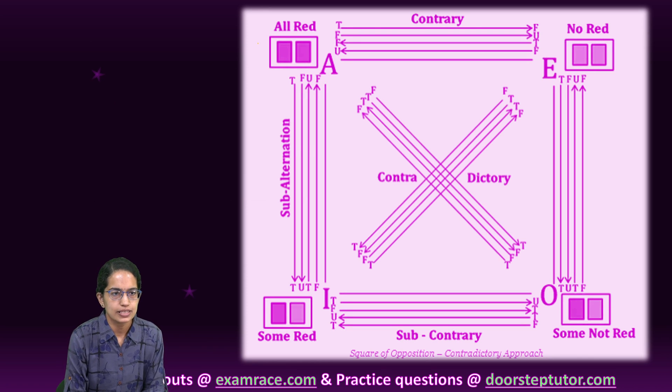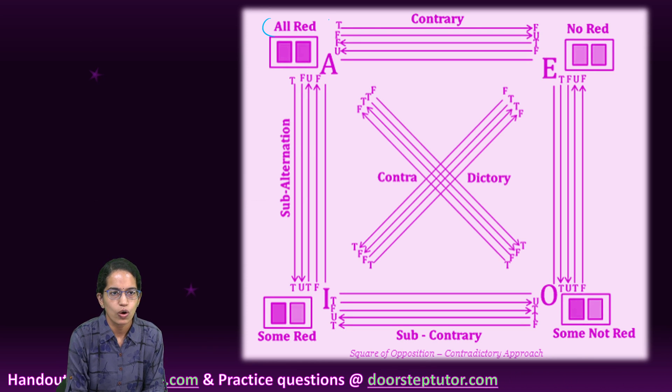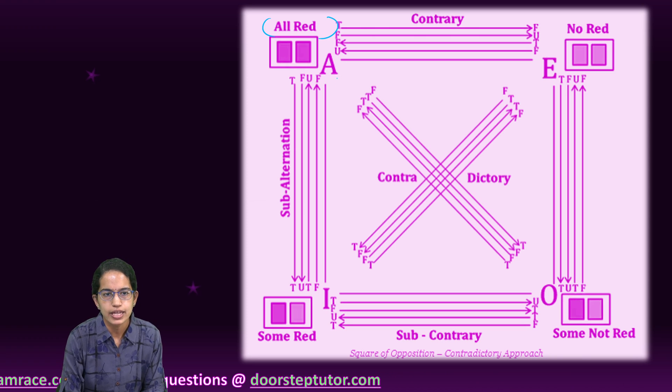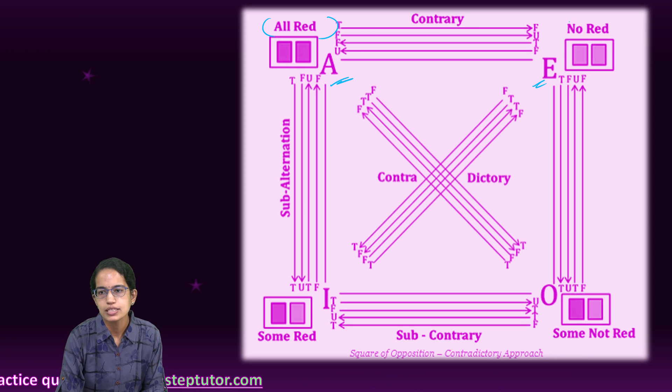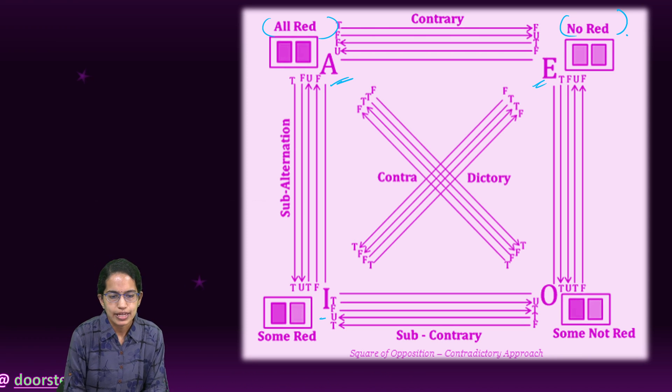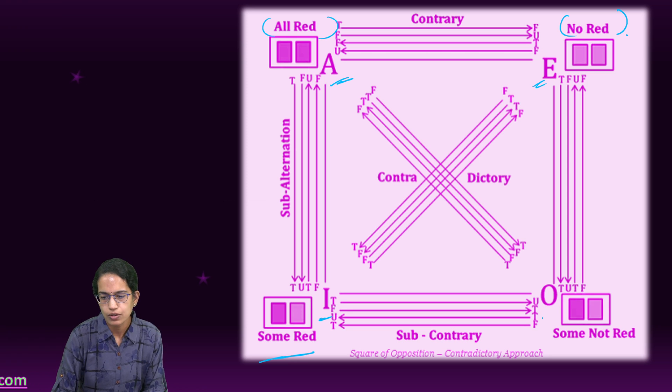I take a very simple example. In the first case, I take all red. A is all, E is none so no red, I is some so some red, and O is some not so some not red.